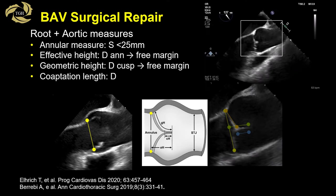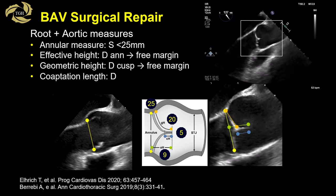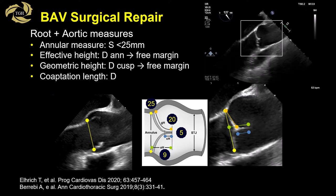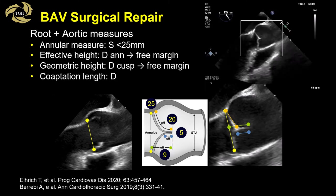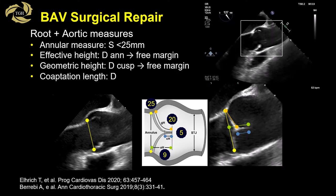Root measurements are important to correct the geometry of the valve. The annulus measured during systole should be less than 25 millimeters. The effective height measured in diastole from the annulus to the free margin should be at least 9 millimeters. The geometric height of the non-fused cusp traced in diastole from the cusp insertion point to the free margin should be at least 20 millimeters.